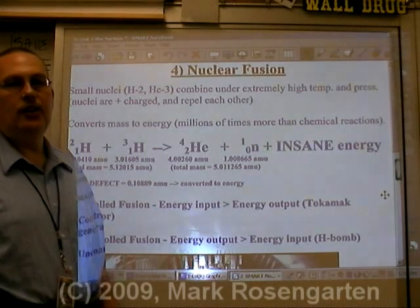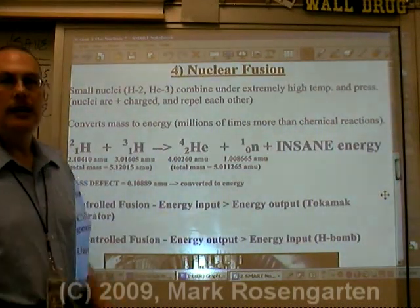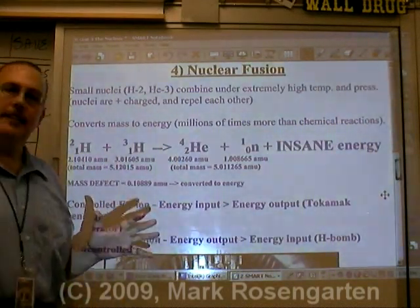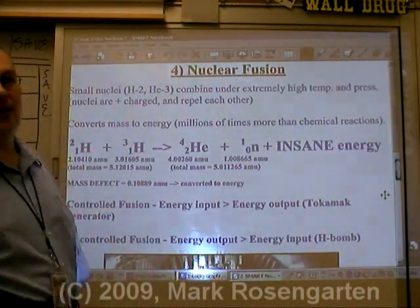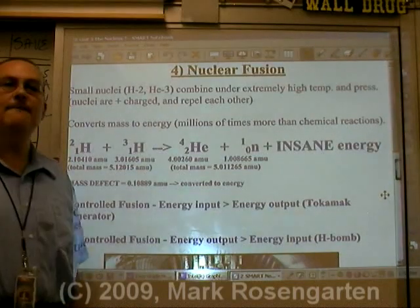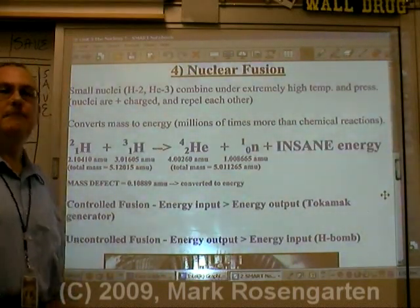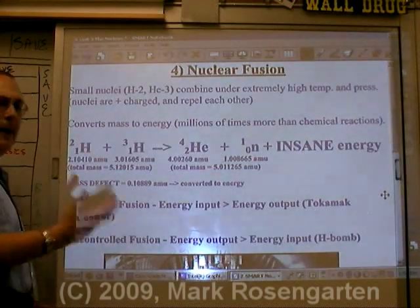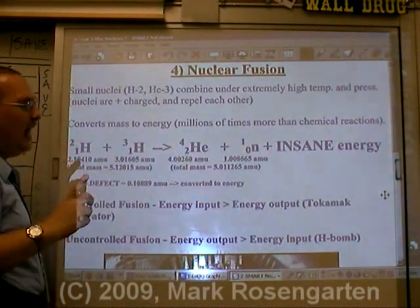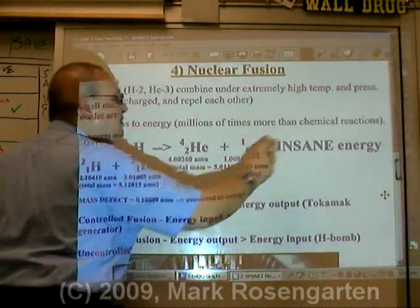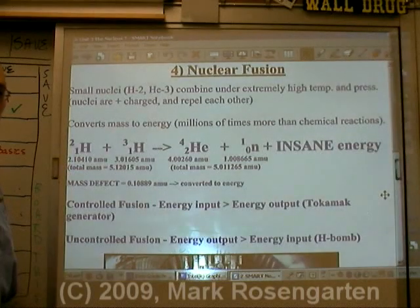The other way we can generate energy with nuclear reactions is through nuclear fusion. Nuclear fusion is the process that has powered the sun for the last 4.5 billion years at least, and has powered every star since the beginning of our universe over 13 billion years ago. Hydrogen combines to form helium, and when that happens, an insane amount of energy is produced because a tiny bit of mass is destroyed.